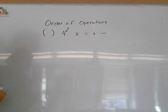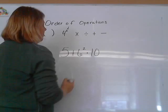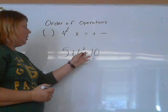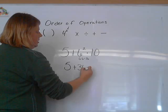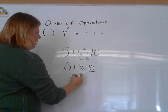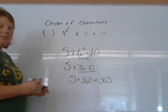Here's one with an exponent in it. So we get 5 plus 6 squared times 10. So according to our orders of operation, we're going to do the number with the exponent first. So we get 5 plus, and this means 6 times 6, which equals 36. 36 times 10. And then we do the multiplication. 5 plus 360. And then we add that together. 365.